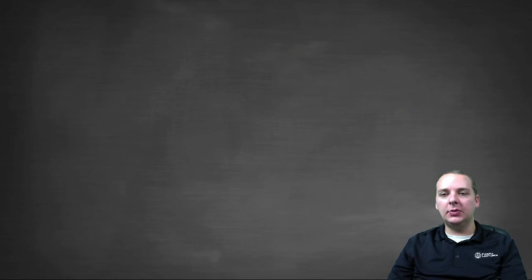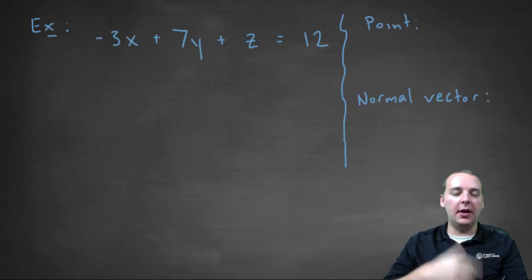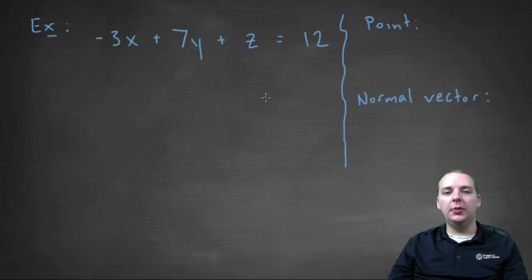Alright, last one. Here's a plane written in general form. So what can you quickly read off from this guy? Well, you can quickly read off the normal vector, it's A, B, C. So negative three, comma seven, comma one.